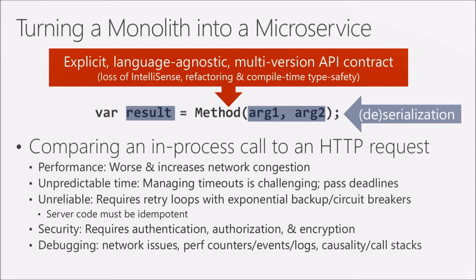You might want to use deadlines instead of timeouts. If you're processing a client request that must finish in five seconds and a sub-request took one second, you only have four seconds left — deadlines are an easier way to manage this. Network requests are unreliable, so you'll frequently introduce retry loops into your code. You might want exponential backoff. You probably also want a circuit breaker pattern so you don't start denial-of-servicing your own services by constantly retrying. That's something else you'd have to learn and incorporate.